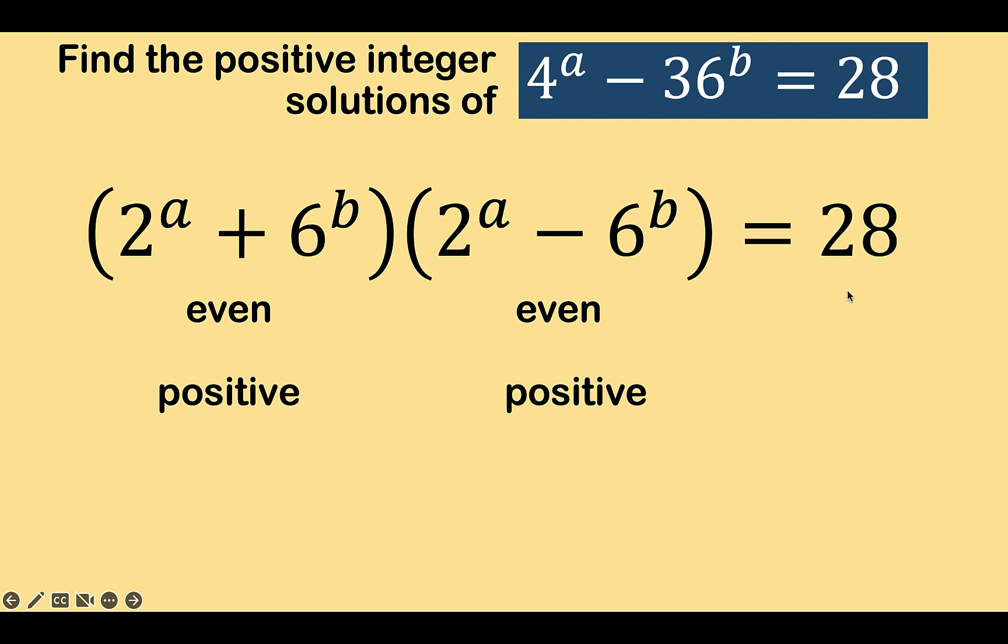Now, let's take a look at positive 28. What are the possible factors of 28? We have 1 times 28, we have 2 times 14, and we have 4 times 7. We want the factors to be both even and both positive. So clearly, 1 times 28 is not that pair of solutions because 1 is an odd number. Also, 7 is not an even number, so let's remove 4 times 7. We are only left with 2 times 14.